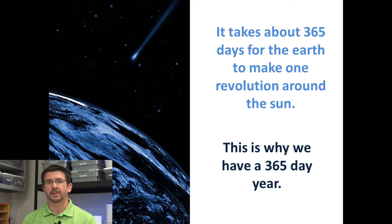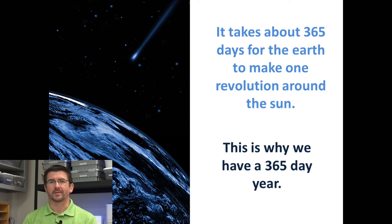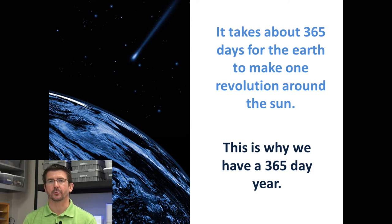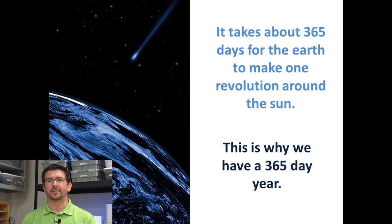This is a cycle that takes about 365 days, or about one year. When we look at this 365-day cycle of Earth revolving around the sun, that's the reason we have a 365-day year here on Earth. The length of our year is based on the time it takes Earth to make one revolution around the sun.